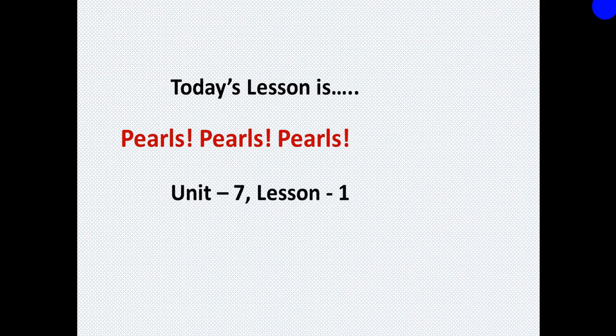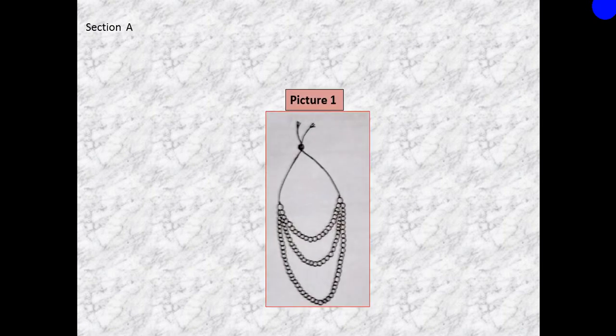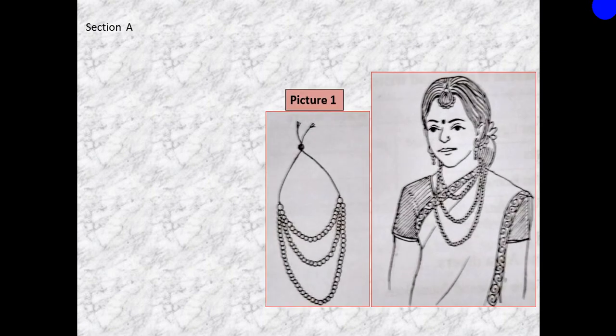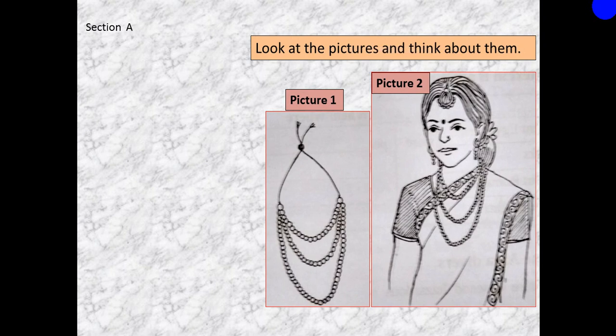This is Unit 7, Lesson 1. So dear students, open your textbook to page 79 and look at Section A. In Section A, there are two pictures. Look at the pictures and think about them. What do you see in the pictures?